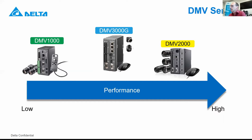The opposite is the DMV 2000 — this has the highest performance. You can connect four cameras maximum, and you can connect both grayscale and color cameras. In the middle there's the DMV 3000, the new one released middle of this year. It's based on GigE controlling between the camera and the controller, and it has the same basic functions as the other two. You can only connect two cameras, grayscale or color, so the performance is just in the middle of the other two.